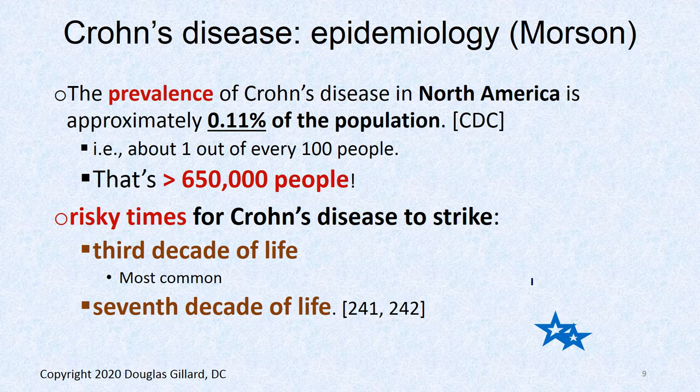The prevalence of Crohn's disease in North America is thought to be about 0.1% — about 1 out of every 1,000 people. A risky time for Crohn's disease to strike is the third decade of life, when many people are in their 20s. The 60s are also a risky time for this to develop.